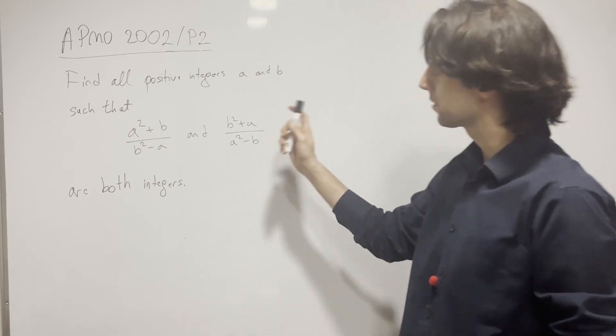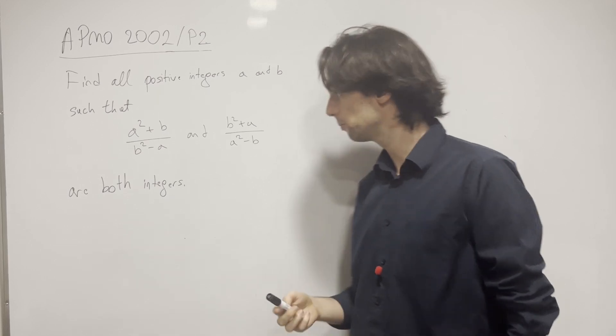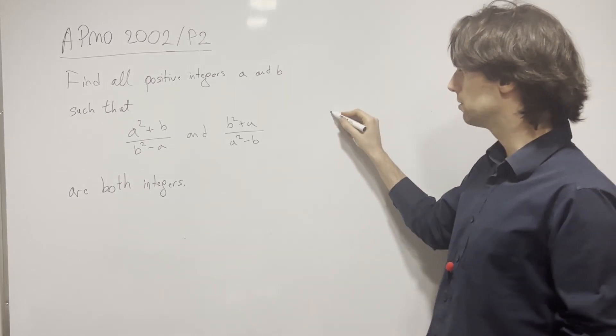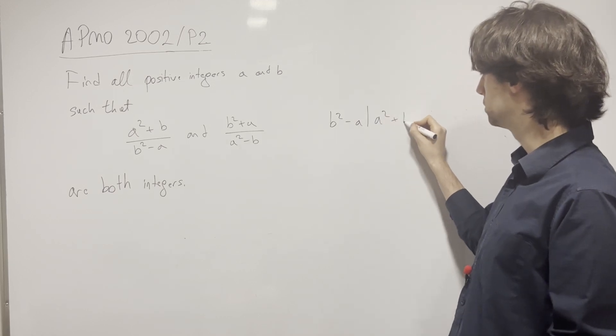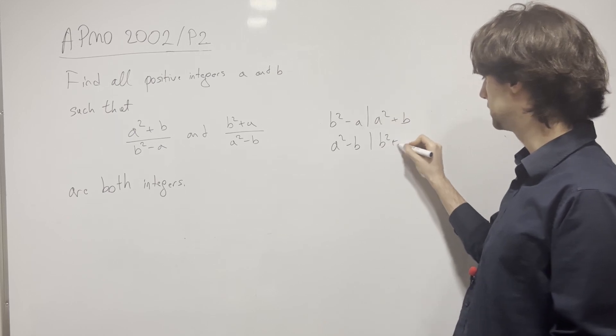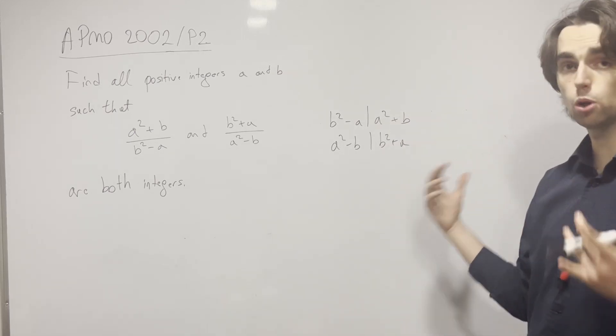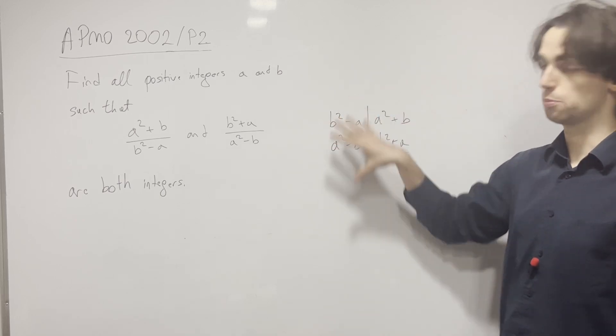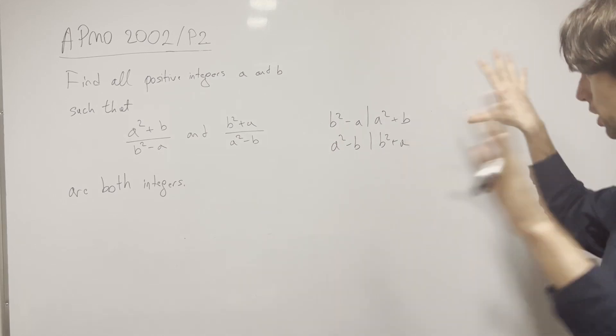So, what do we do here? We have to find all positive integers a and b such that both of these are integers. In other words, we have b² - a divides a² + b and a² - b divides b² + a. My first question here is, is there something you notice about our problem statement? Take two minutes and see if there's anything you notice here in general.